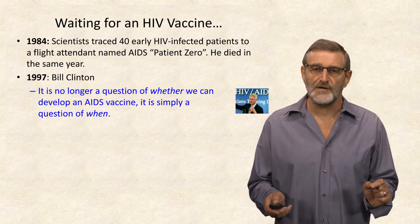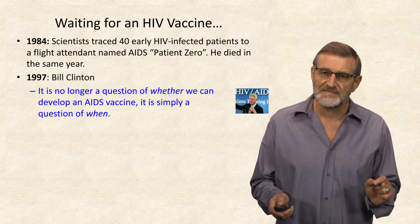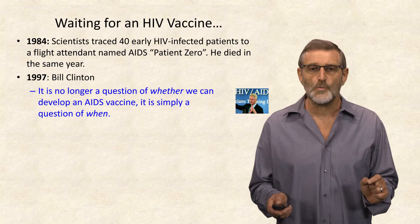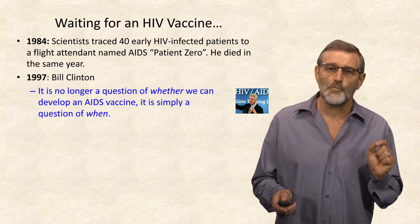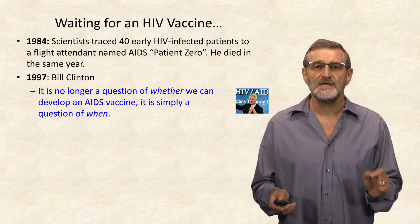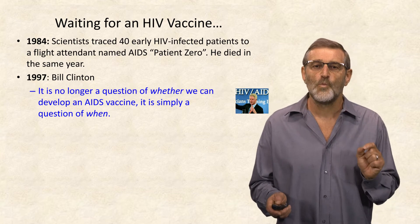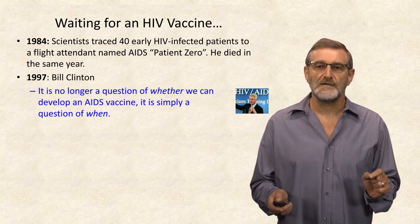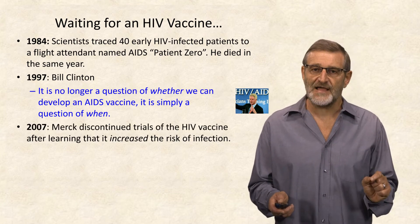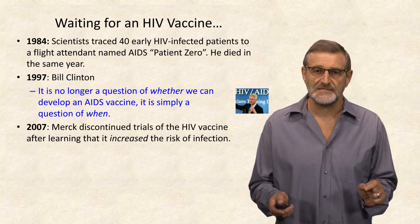In 1994, Bill Clinton famously announced that it is no longer a question of whether we can develop an AIDS vaccine — it is simply a question of when. However, today, we still don't have an HIV vaccine.